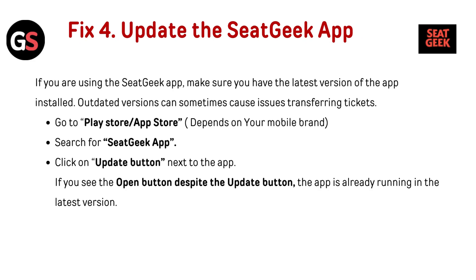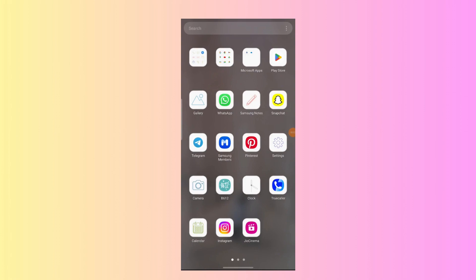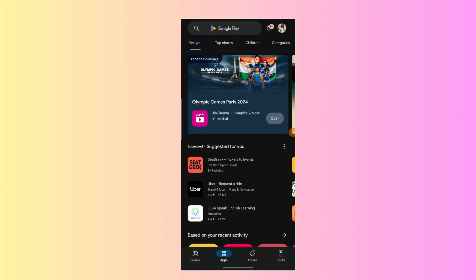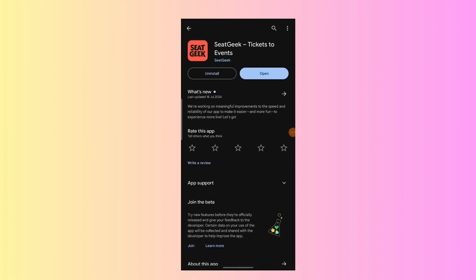Fix 4: Update the SeedGeek app. If you are using the SeedGeek app, make sure you have the latest version installed. Outdated versions can sometimes cause issues transferring tickets. Go to the Play Store or App Store depending on your device, search for the SeedGeek app, and click the Update button next to the app. If you see the Open button instead of Update, the app is already running the latest version.